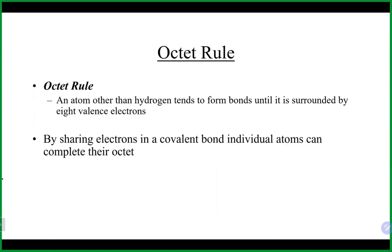When everybody is trying to reach eight electrons, that is known as the octet rule — 'octet' meaning eight. In a covalent situation, everybody will continue to make bonds until they have eight valence electrons around them. The notable exception is hydrogen, which only needs to get to helium and only needs two — sometimes referred to as the duet rule. Hydrogen two, everybody else eight.